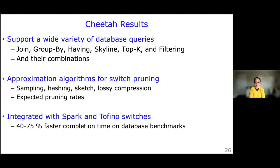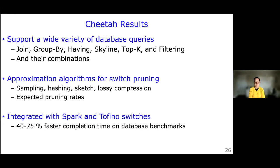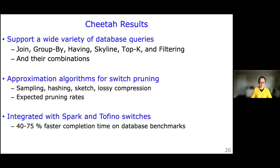We leverage approximation algorithms by introducing the switch pruning abstraction with provable pruning rates. We implemented Cheetah in Spark so you can run your Spark database queries without any changes, but under the hood it offloads part of the queries to Tofino switches, giving about 40 to 75 percent improvement in completion time for standard database benchmarks.